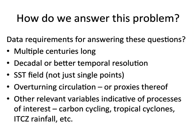To answer these questions there are certain data requirements. If you want to get at multi-decadal variability, you have to have records that are multiple centuries long with decadal or better temporal resolution. Ideally we need to know what sea surface temperatures were doing, because the fundamental question is the relationship between sea surface temperature in the Atlantic and overturning circulation. We also need a record of overturning circulation or some proxy thereof, and long records of other variables we're interested in.